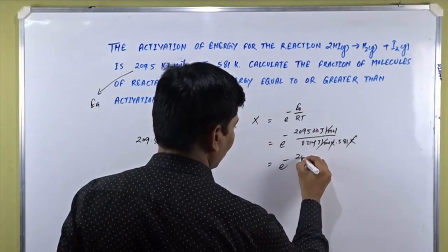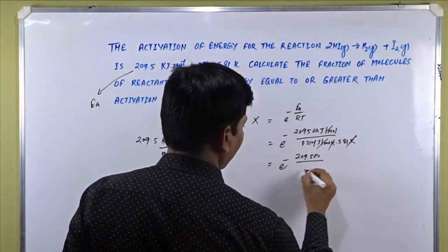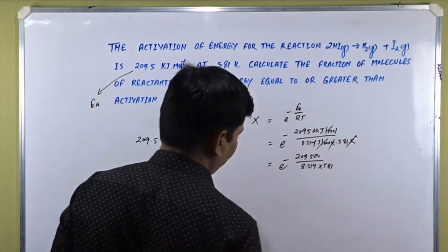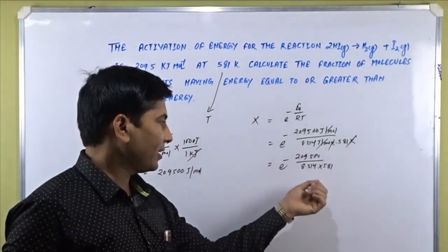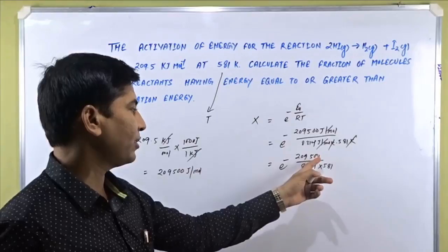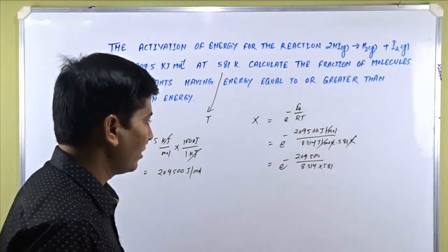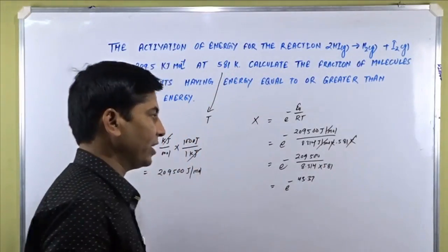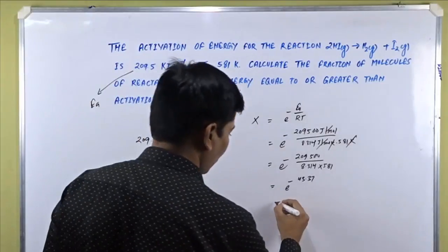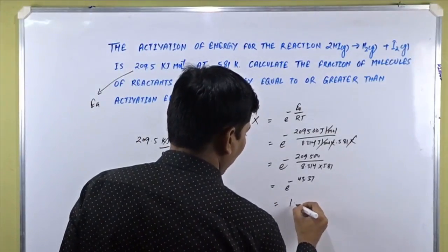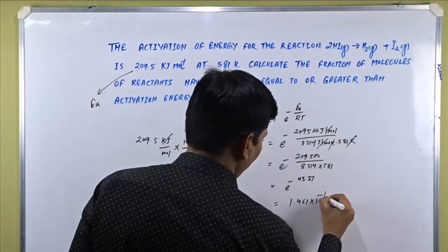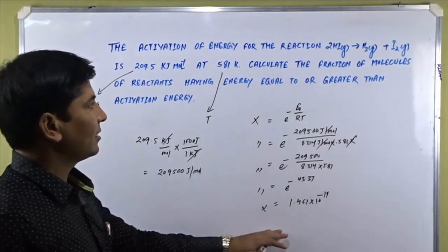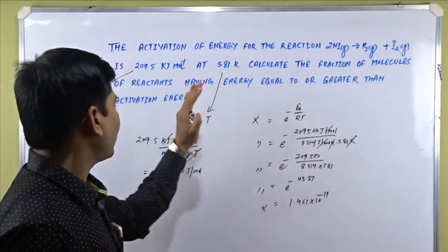We now simplify: e to the power of minus 209,500 divided by (8.314 multiplied by 581). Multiplying the bottom numbers and dividing, we get approximately 43.37 in the exponent. The resulting value is 1.461 multiplied by 10 to the power of minus 19. This is the x value — the fraction of molecules of the reactants taking part in this chemical reaction.